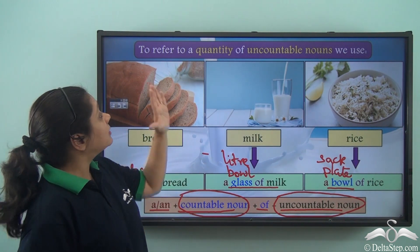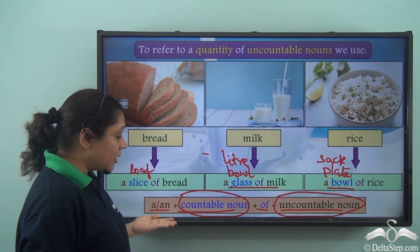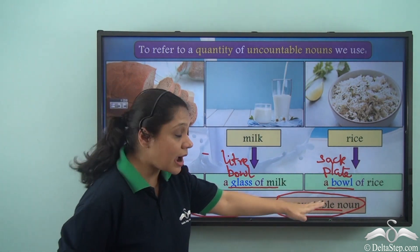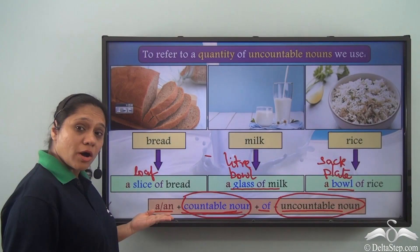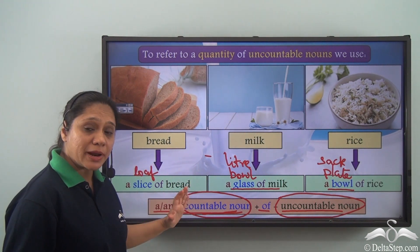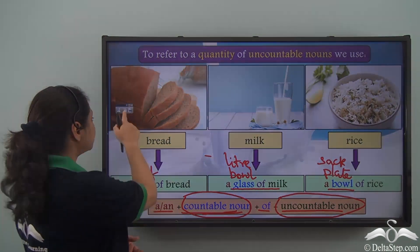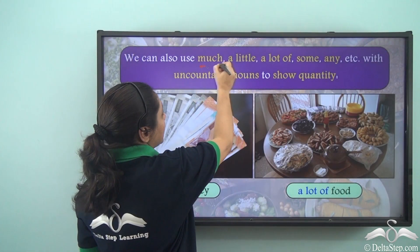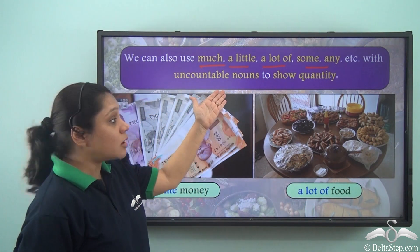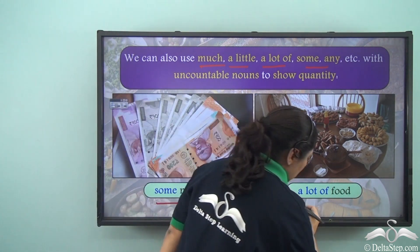To refer to a quantity of uncountable nouns, we use 'a' or 'an,' whichever is correct, with the countable noun, then 'of,' and then the uncountable noun. We use 'a' or 'an' when referring to a single unit — 'a piece of bread' or 'a slice of bread.' But if referring to more than one unit, we say 'five slices of bread.' We can also use much, a little, a lot of, some, or any with uncountable nouns to show quantity — for example, 'some money' or 'a lot of food.'